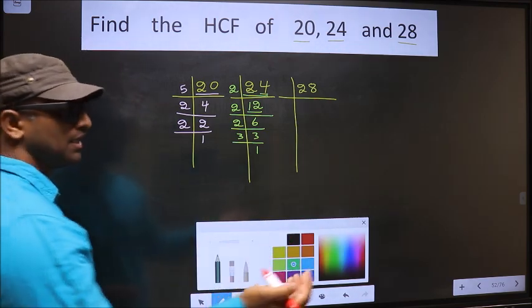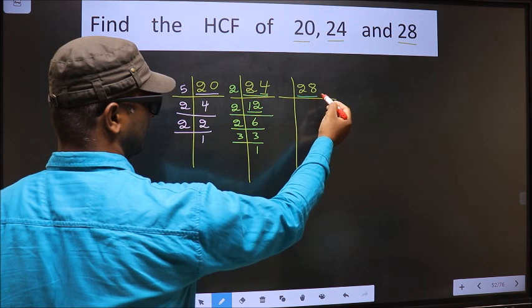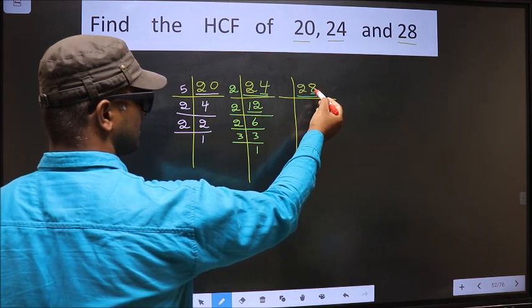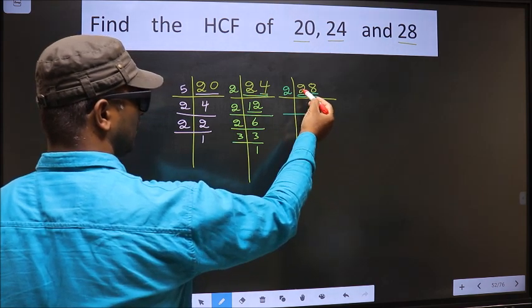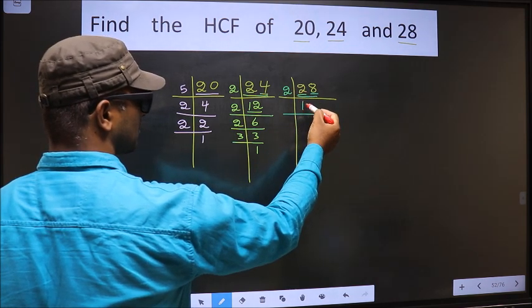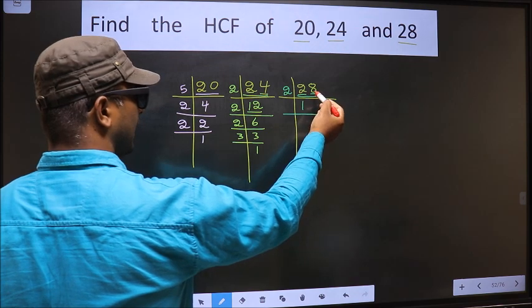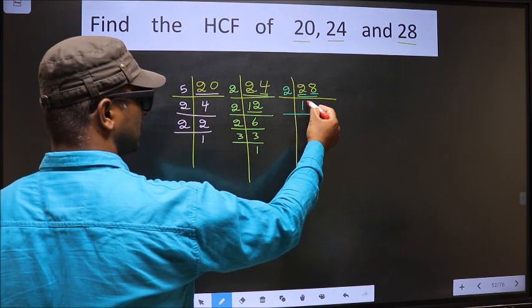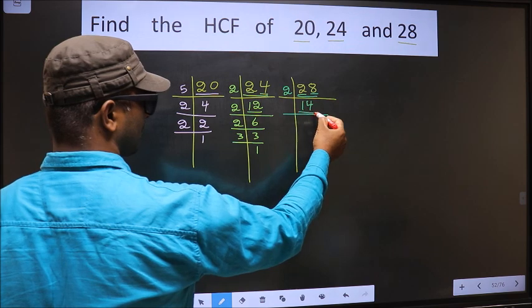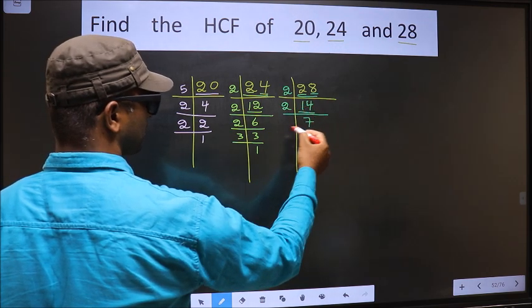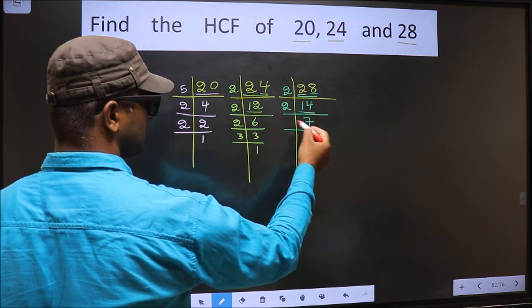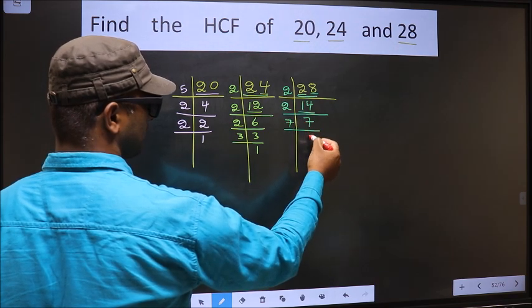Now the other number is 28. The last digit is 8, even, so we take 2 here. The first number 2, when do we get 2 in the 2 table? 2 times 1 is 2. The other number 8, when do we get 8 in the 2 table? 2 times 4 is 8. Here we have 14. 14 is 2 times 7. Now we have 7. 7 is a prime number, so 7 times 1 is 7.